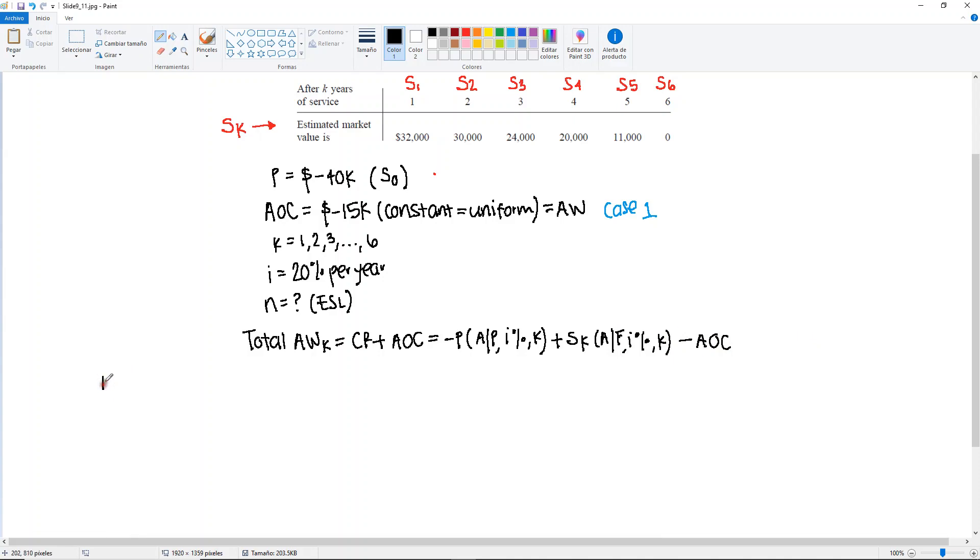So now let's do this but for K equals to 1. It's just a matter of plugging in the values here. Here we have the total annual worth 1, which is going to be the P doesn't change. The P is going to be the same every year. Minus 40,000. Find A given P at 20% for 1 year.